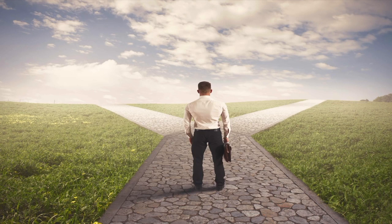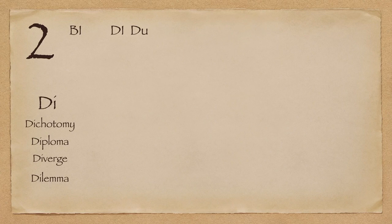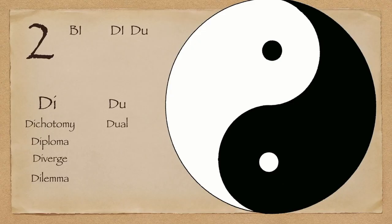Another form of the prefix di is du, very much like the Hindi prefix du — it means two. So the first word is dual — anything consisting of two parts, elements, or aspects, very much like binary. The dual role at work, dual personalities, dual functions — anywhere where there are two things involved, you can use the word dual.